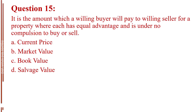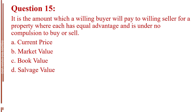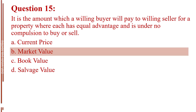Question number 15. It is the amount which a willing buyer will pay to a willing seller for a property where each has equal advantage and is under no compulsion to buy or sell. Letter A, current price. Letter B, market value. Letter C, book value. Letter D, salvage value. The answer is Letter B, market value.